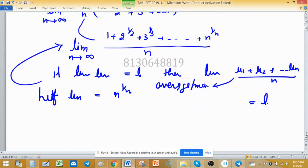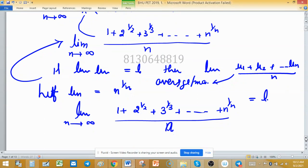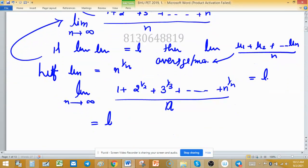limit n tends to infinity of (1 + 2^(1/2) + 3^(1/3) + ... + n^(1/n))/n. This limit is equal to the limit of n^(1/n) when n is tending to infinity.